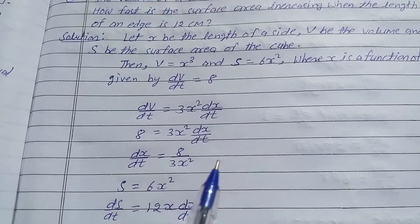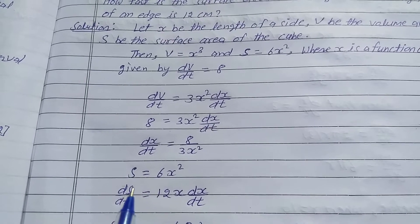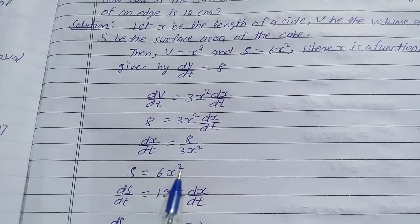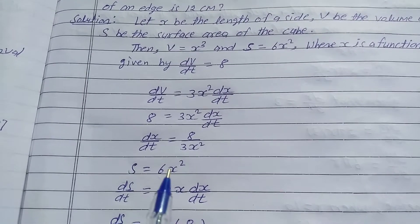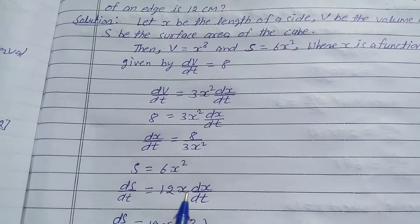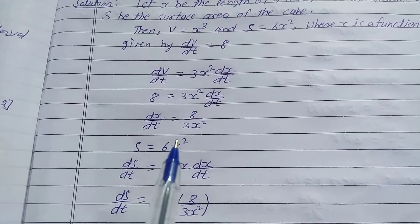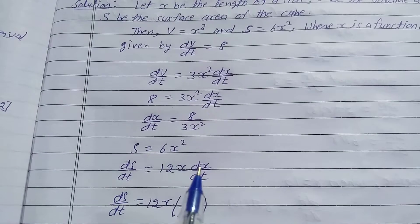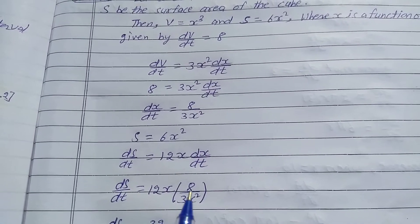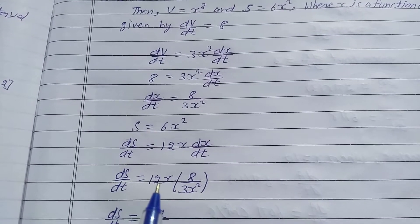Now, surface S is equal to 6x², so differentiate the surface with respect to t: dS/dt is equal to 12x times dx/dt, because 6 is constant and the derivative of x² is 2x. Now substitute dx/dt equal to 8 upon 3x²: dS/dt is equal to 12x multiplied by 8 upon 3x².